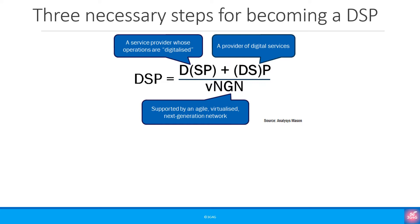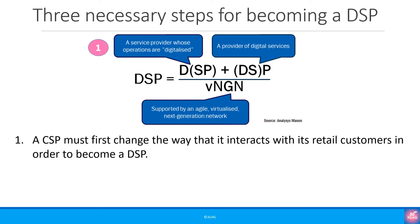There are essentially three necessary steps for a CSP to become a DSP. The first is that a CSP must change the way that it interacts with its retail customers in order to become a DSP — becoming a service provider whose operations are digitalised.